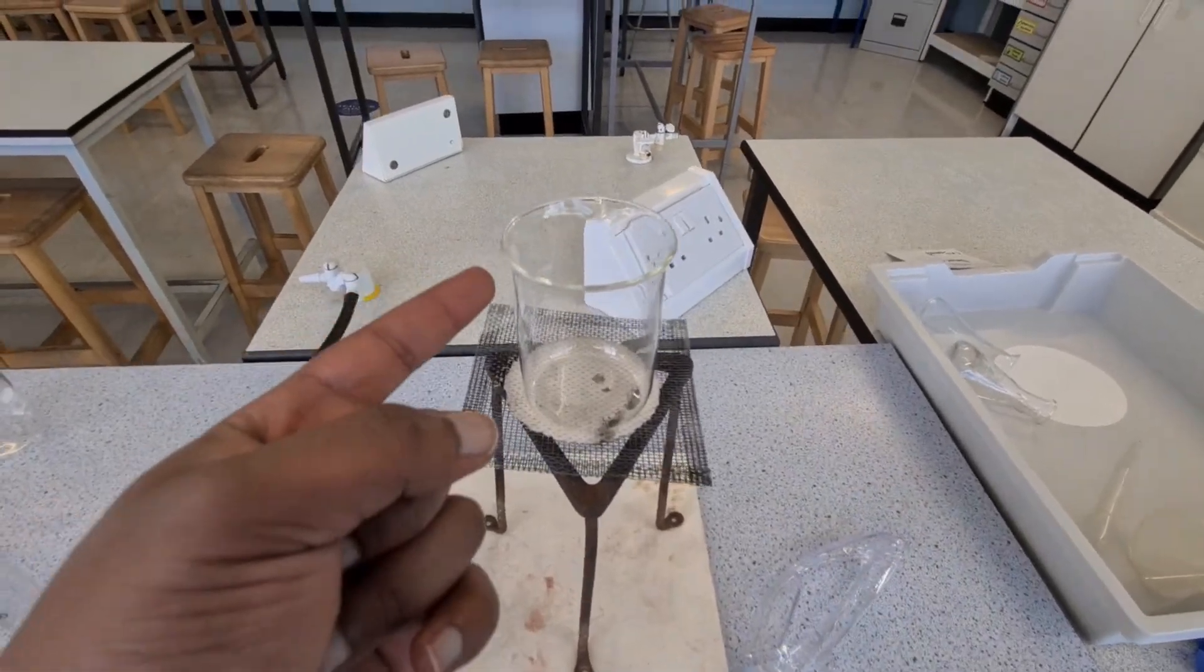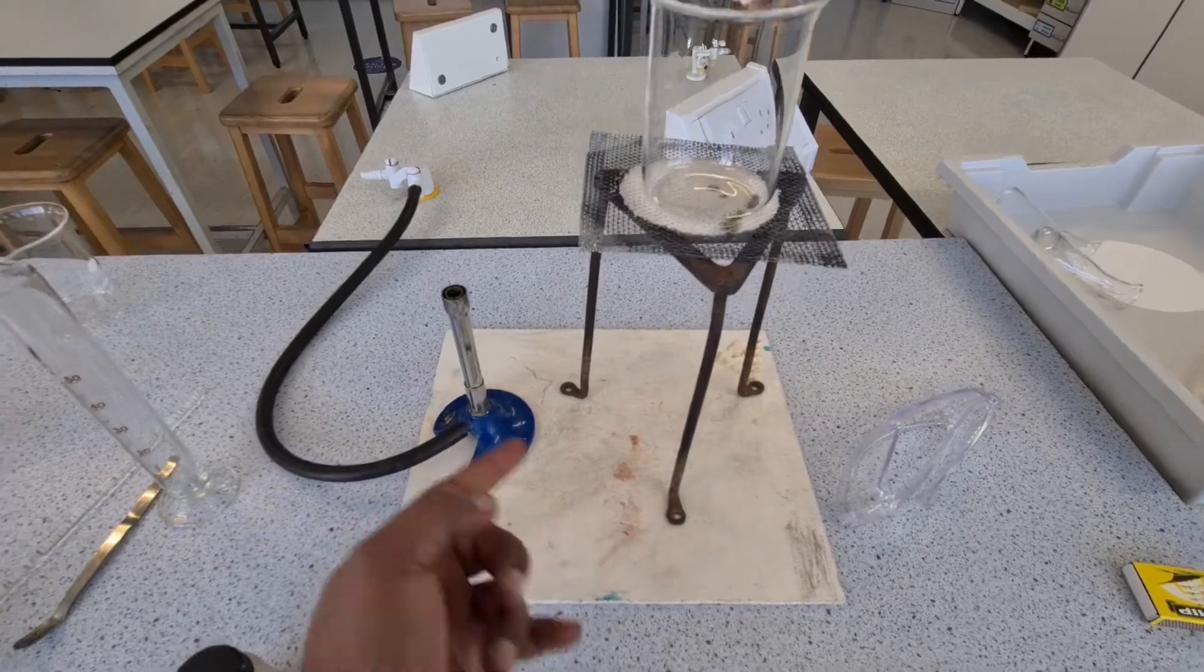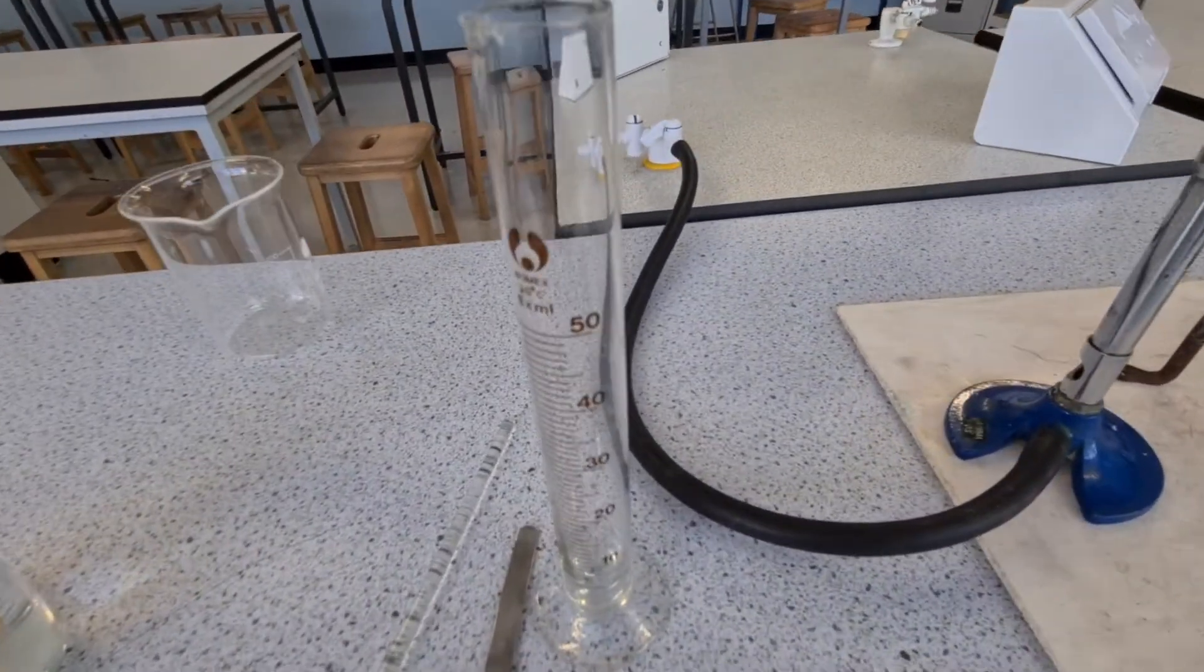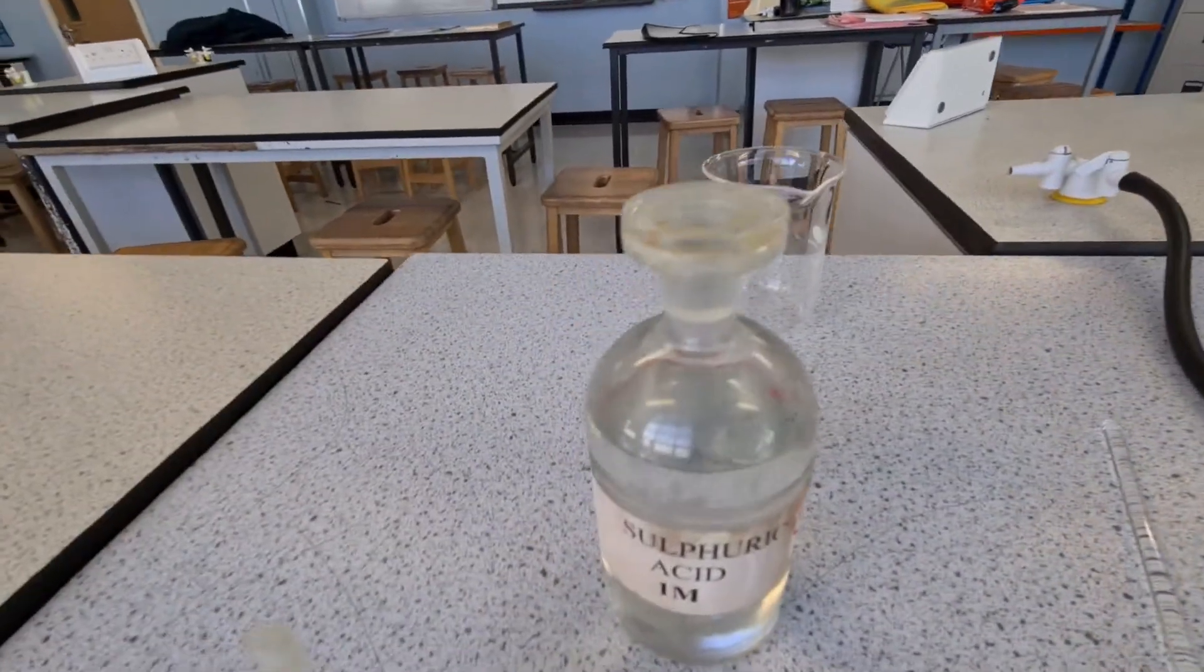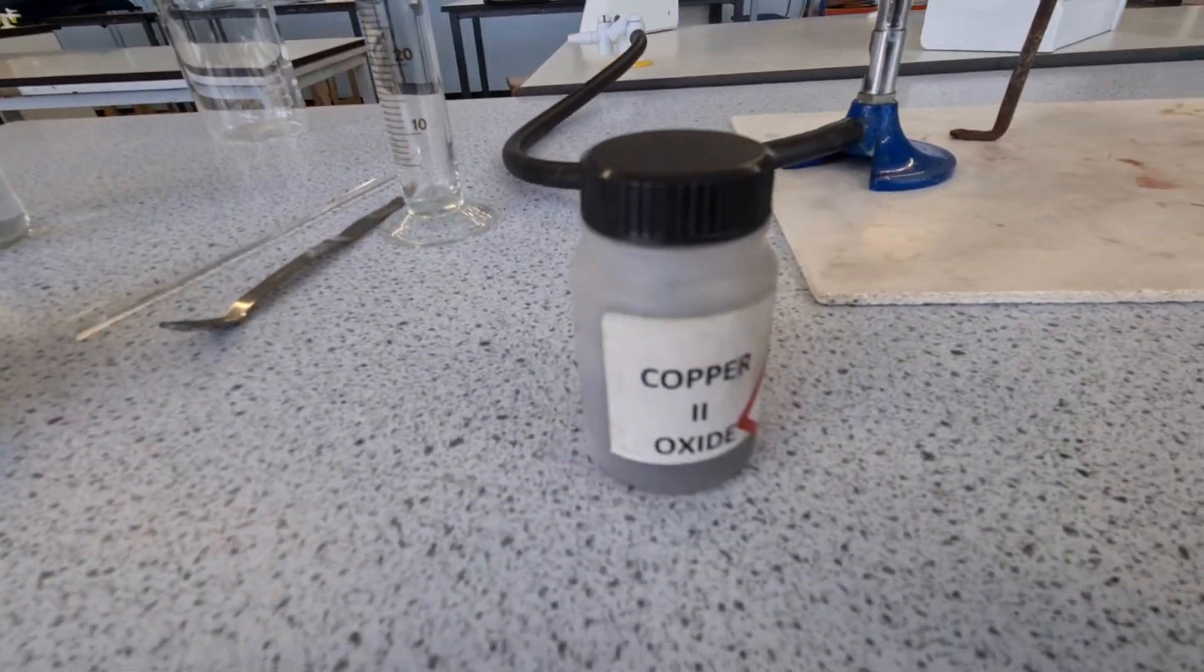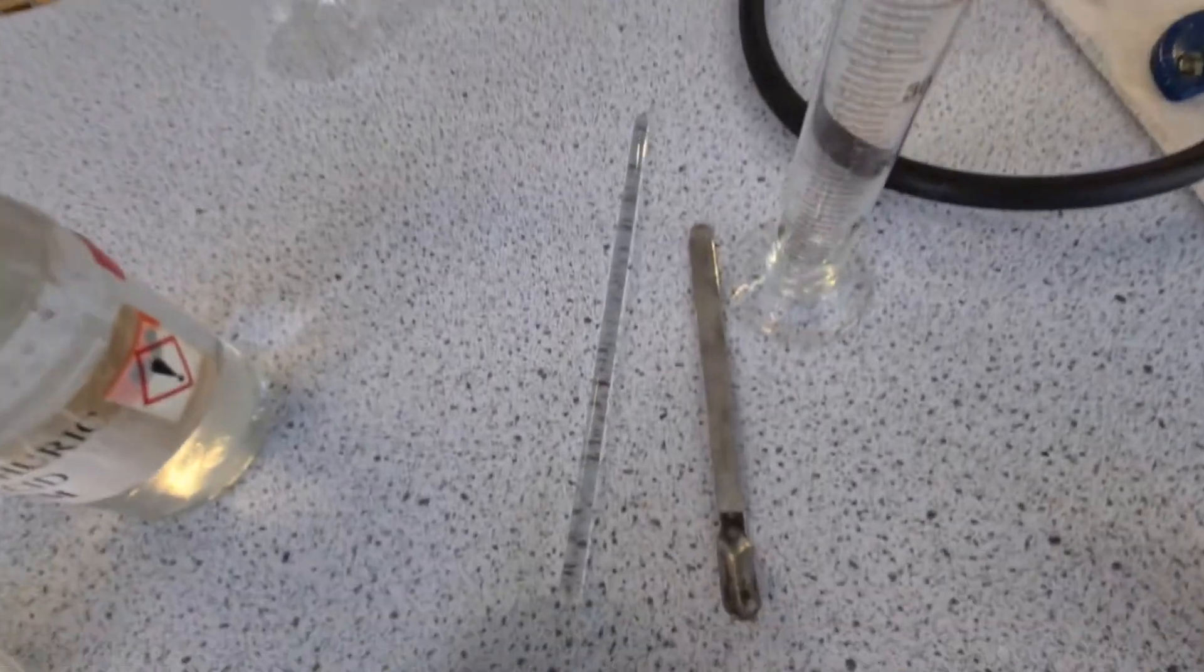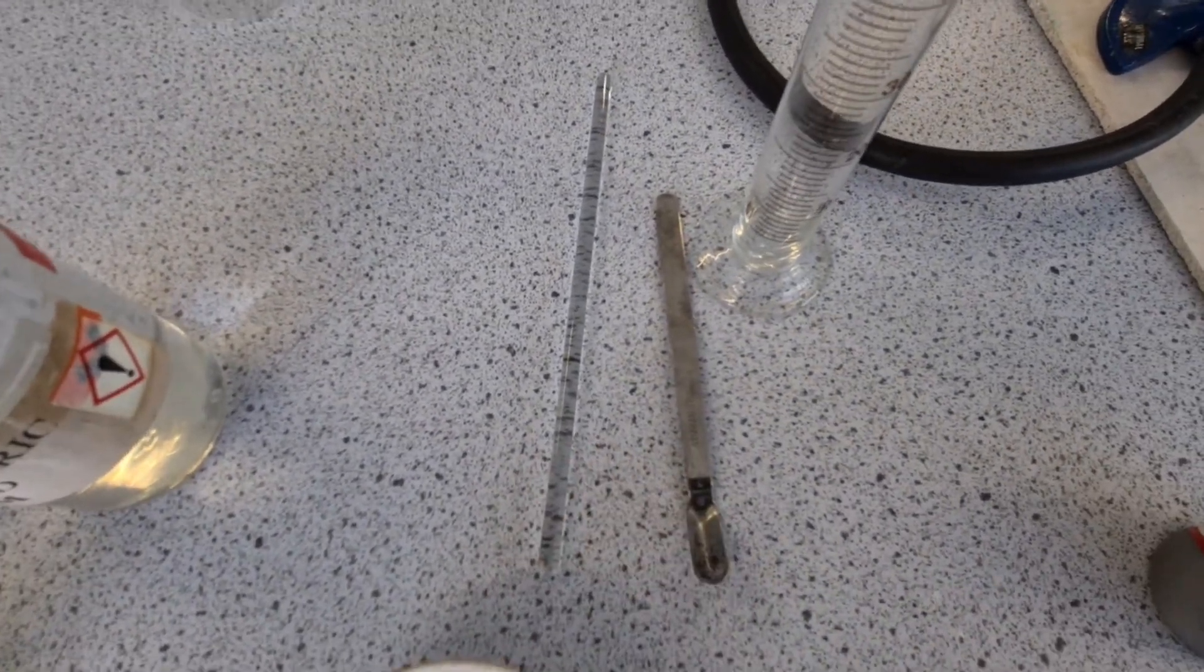Over here I've got my glass beaker, wire gauze, tripod, heatproof mat, and a Bunsen burner set up like this. I've got my measuring cylinder, which can be used to measure the volume of the acid. I've got my insoluble base copper oxide over here. I've also got a stirring rod on the left and a spatula on the right.